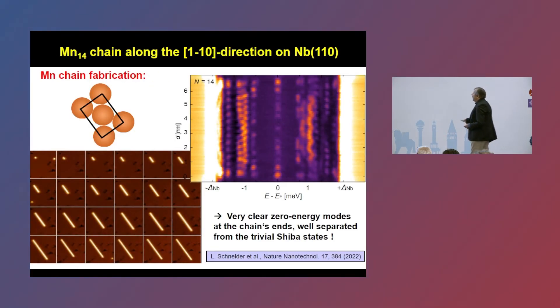In this case, manganese chains on a niobium substrate in the superconducting state. And we could really map out the predicted zero energy modes. Here, very well separated from all the finite energy states, which are trivial. And we could even determine the topological nature of the gap structure. And this is seen here.